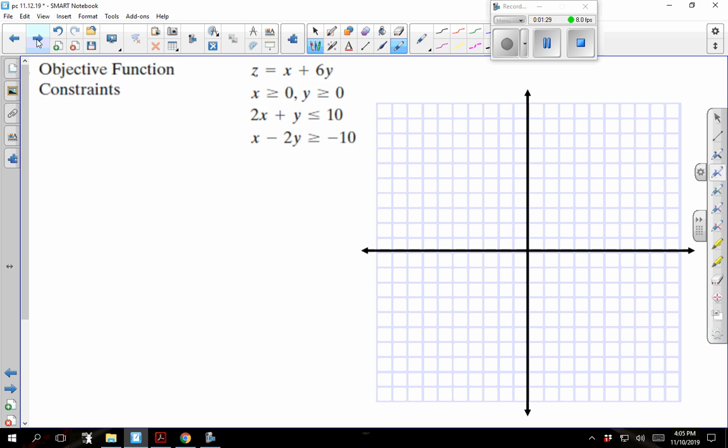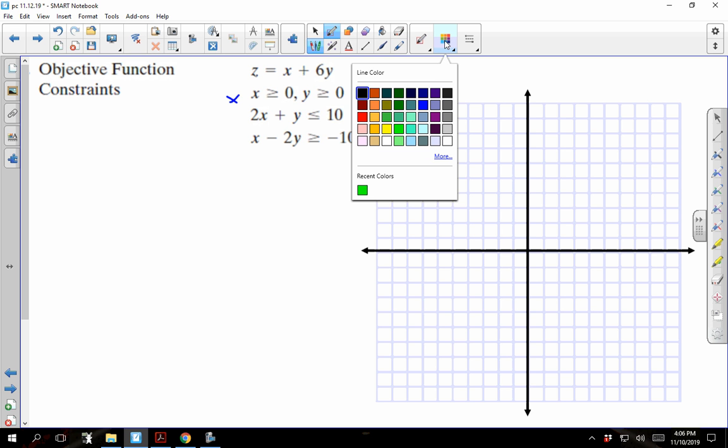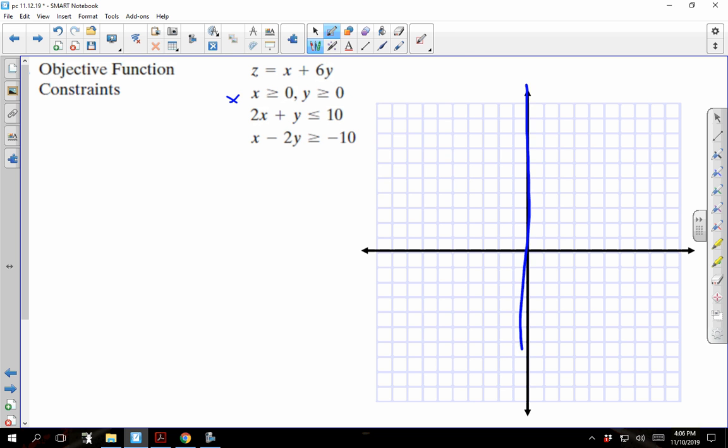Right off the bat, the first one that we want to do is x greater than or equal to zero. So x is zero, it's going to be a vertical line right here at x equals zero. It's equal to it, so it's going to be a solid line, but it also says it's greater than. So we want to shade to the right of this.